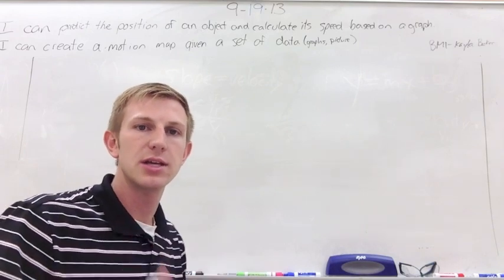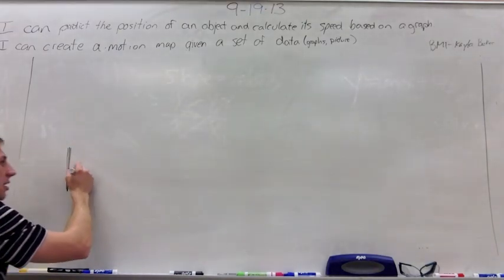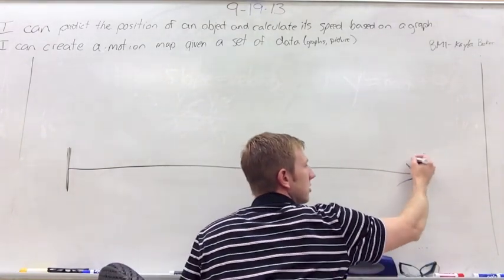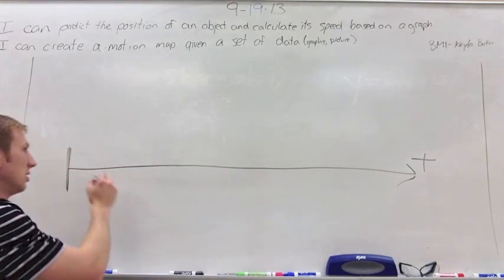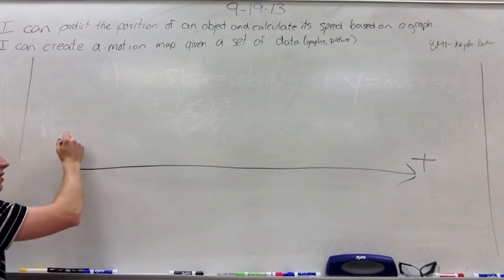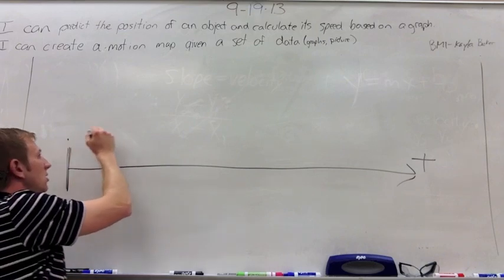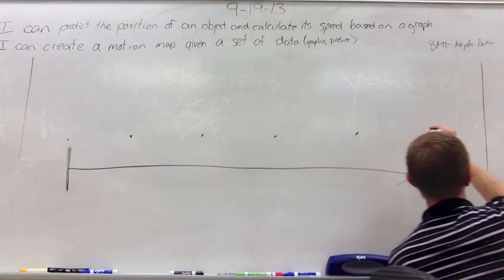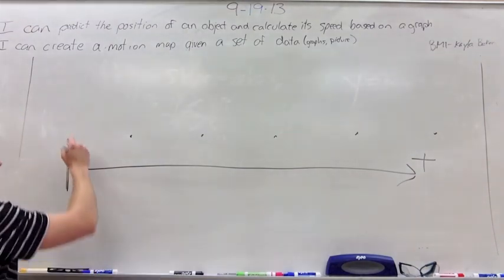I'm going to pretend that I'm a car. This is my zero point, so this will be my starting point. Going this way will be positive. I'm going to be the car and I'm going to go at a constant positive velocity. Every time that a second passes, I'm going to put a dot. It's kind of hard to see those, so I'm going to make them a little bit bigger for you.